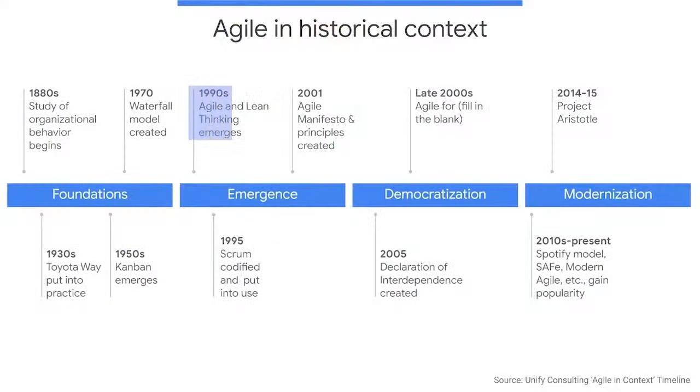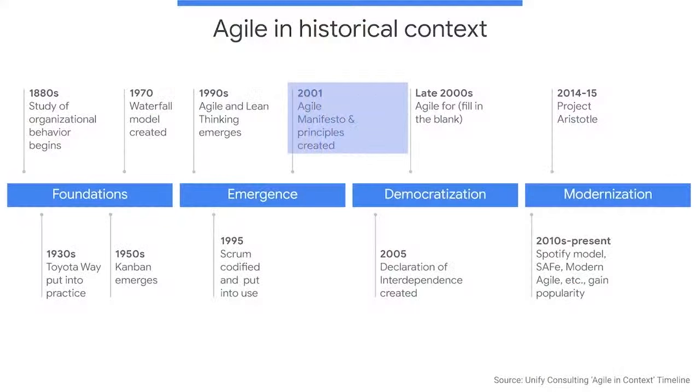Agile methodologies emerged organically during the 1990s as the software industry was booming. Software startups, like Google, were blazing a trail to get more software products built in less time. Meanwhile, the tech giants of the time were experimenting with faster ways to build better software and stay competitive. Software also includes the code behind innovations in agriculture, medical devices, manufacturing, and more. In this competitive growing environment, companies couldn't just create new innovative products — they also needed to innovate the very processes they were using to develop those new products.